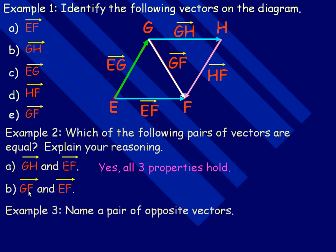For B here, it says GF. So GF would be this vector and EF is this vector here. And those vectors are not parallel. They might be the same length. But as soon as you get one of those properties not holding, not being true, then we can say the vectors are not equal. It says here they are not parallel.